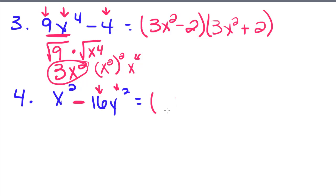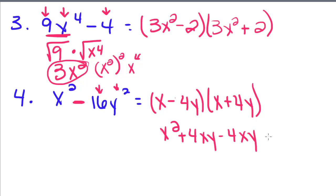We're going to take the square root of the first term, x, minus the square root of the second term, which is 4y, and then x plus 4y. And if you wanted to foil that back out, you get x squared plus 4xy minus 4xy plus 16y squared.